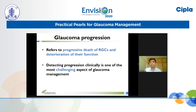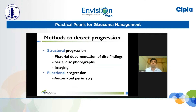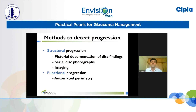Going forward, we will discuss some of the reasons for this. Methods to detect glaucoma progression can be broadly classified into methods to detect structural progression and methods to detect functional progression. Functional progression is detected predominantly on standard automated perimetry.